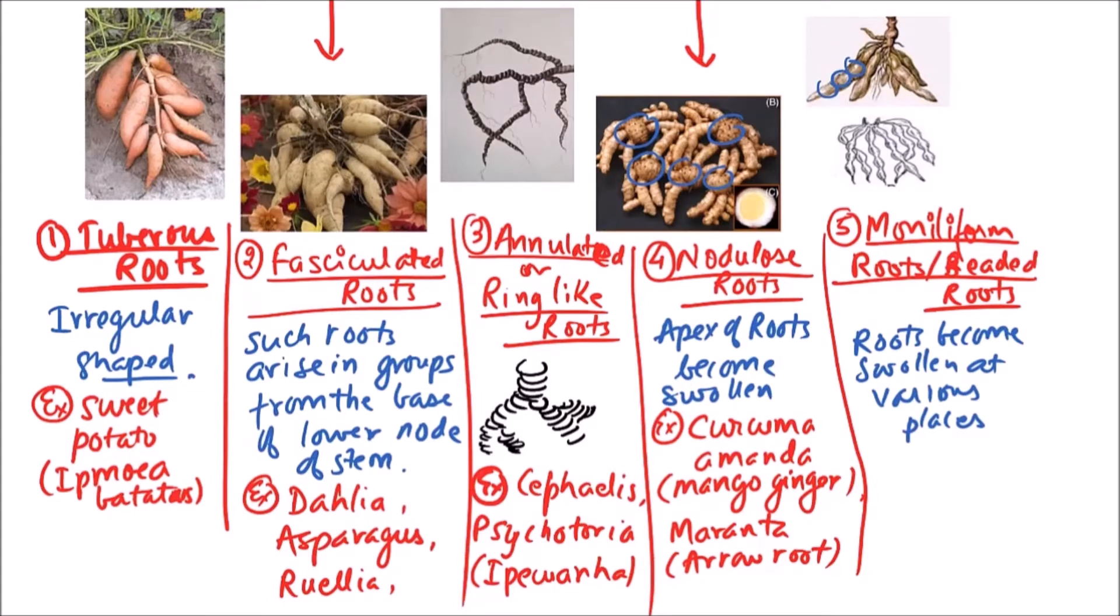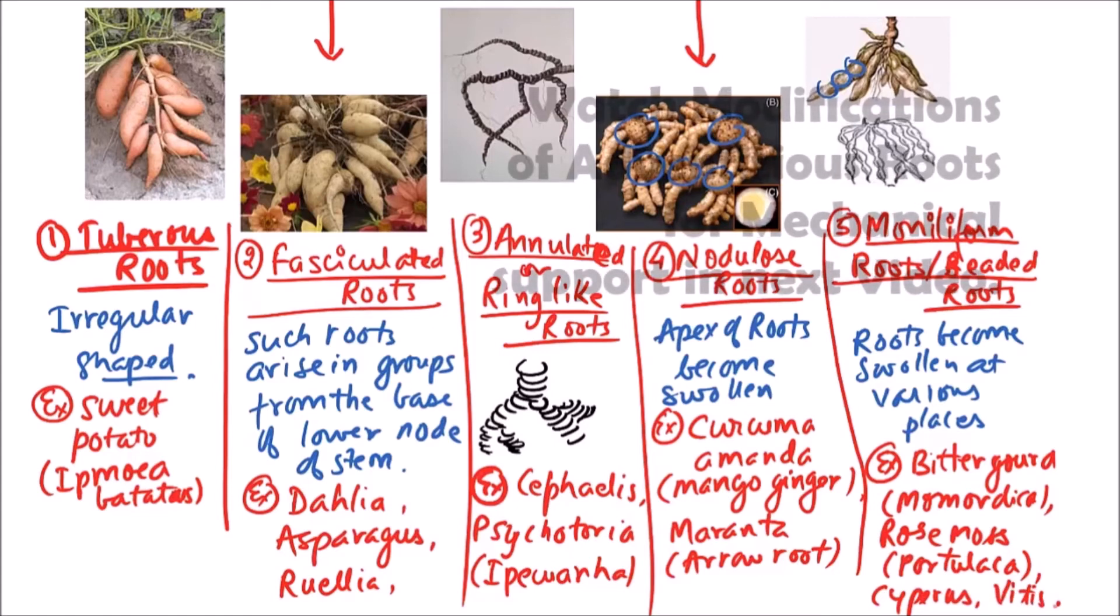The examples of this category are bitter gourd, that is Momordica, rose moss which is basically Portulaca, also observed in Cypress and Vitis, the grapes family.